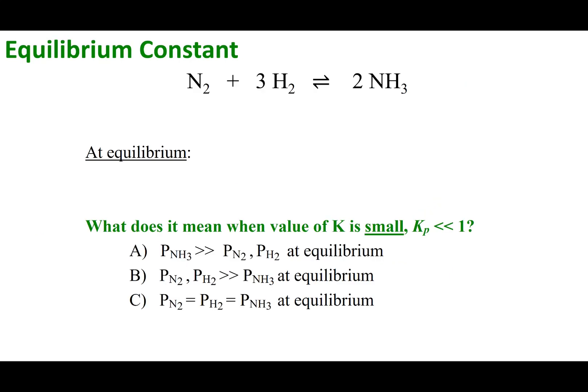Here is our first quiz. The player is going to stop and prompt you to answer. Take a look at this equilibrium. If I tell you that Kp is really, really low — much, much, much less than 1 at equilibrium — what can you tell me about the partial pressures of ammonia, hydrogen, and nitrogen?